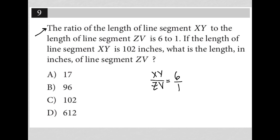So the ratio is 6 to 1. If the length of line segment XY is 102 inches, then our numerator is really 102 inches. What is the length in inches of line segment ZV? I don't know what it is, so I replace that position with X. Here's the proportion I end up creating by translating this word problem.